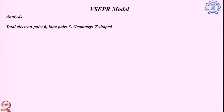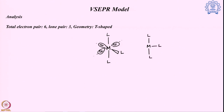With six electron pairs and three lone pairs: two of the lone pairs are opposite each other to minimize lone pair repulsion, but one lone pair must come into an adjacent position. Orienting this without the lone pairs, the result is a T-shaped structure, with the two remaining bond pairs slightly bent due to lone pair–bond pair repulsion.